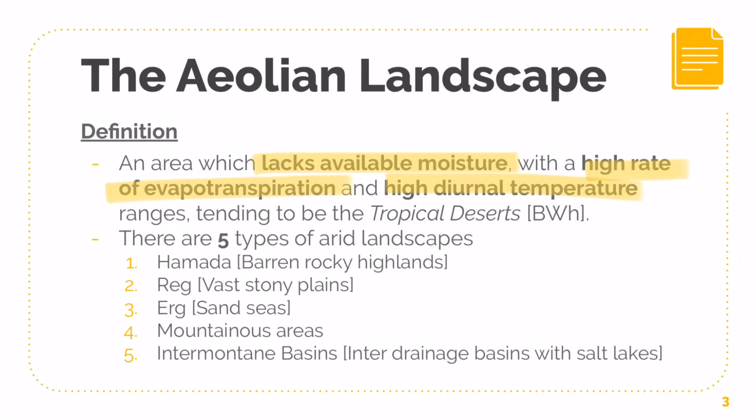This is usually your tropical deserts — it is very classic of a tropical desert. If you go back to lesson 4 on your Köppen climates, you'd understand that tropical deserts — your BWH climate — have extremely high diurnal temperature. During the day it's extremely hot, and at night it's extremely cold due to the lack of cloud cover. The Aeolian Landscape is favoured by such conditions, with lack of rainfall and high temperature, which is why you get things like sand dunes.